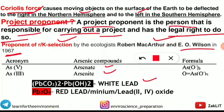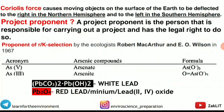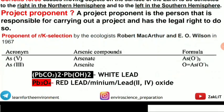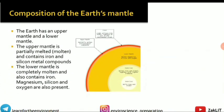A match-the-following question covered chemical formulas: Arsenate — AsO₄³⁻; Arsenite — AsO₃³⁻; White lead — Pb(CO₃)₂·Pb(OH)₂; Red lead (also called minium or lead(II,IV) oxide) — Pb₃O₄. Those who knew these formulas would have scored full marks.